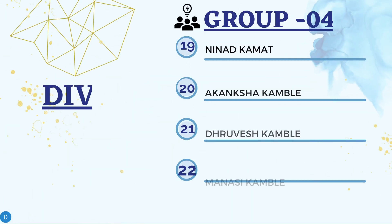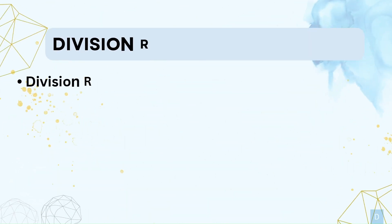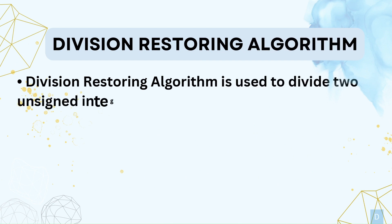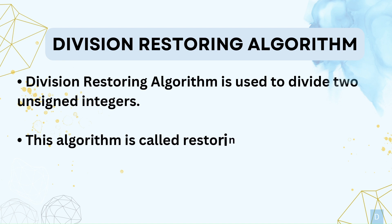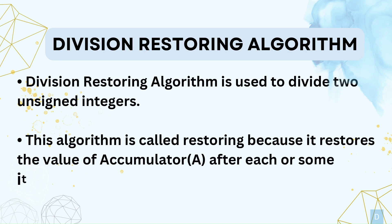We are Group 4 from Division I, Batch 1. Our topic is the Division Restoring Algorithm. The Division Restoring Algorithm is used to divide two unsigned integers. This algorithm is called 'Restoring' because it restores the value of the accumulator after each or some iterations.